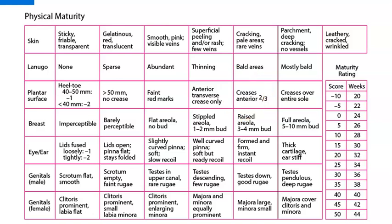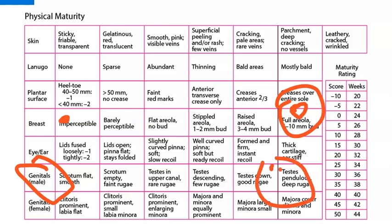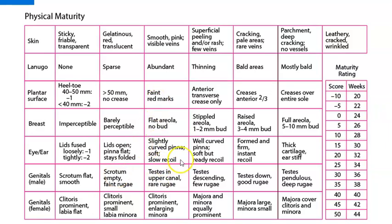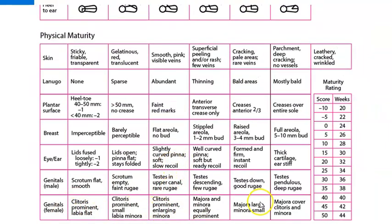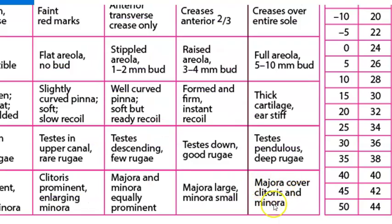The breast buds. How are the breast buds? If it's a full area with a nice bud, then it will be a mature baby. A normal baby. Otherwise, it will be a premature baby. How's the eye, the ear, the genitalia? If it is having, the testes is down, it has descended and there is a rugae, nice rugae on the testes, then it is a mature baby. Do you call it as a mature baby? Then coming to the genitalia of the female also, they have mentioned how it should be. So if the labia majora covers the clitoris and the minora, then it is a mature baby.